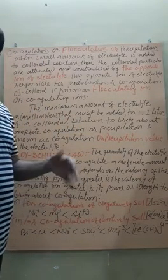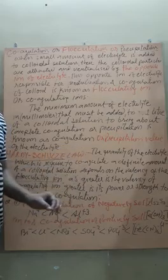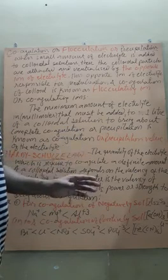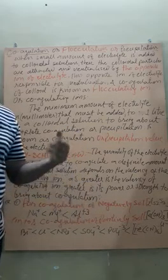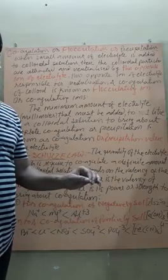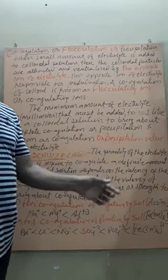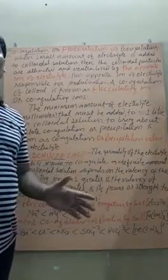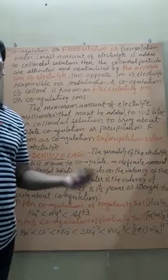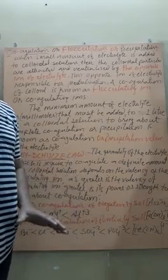That is, quantities required is okay, but also, it depends on the valency of the coagulating ion. As higher the valency of coagulating ion, greater will be the strength or power of coagulation of colloidal particle.